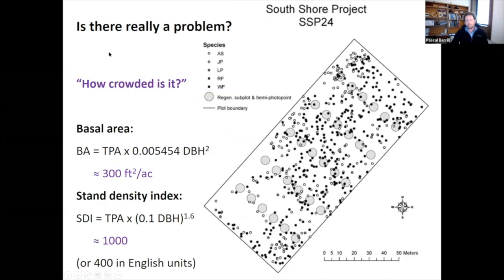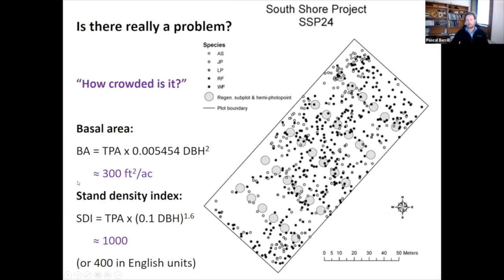So is there really a problem? That leads me to ask: how crowded is it? How much competition is there? For that, foresters like basal area as a metric. The basal area equation is provided here — all you need is trees per acre and DBH to get a basal area estimate. More recently folks are adopting stand density index as a more precise measure of crowding.